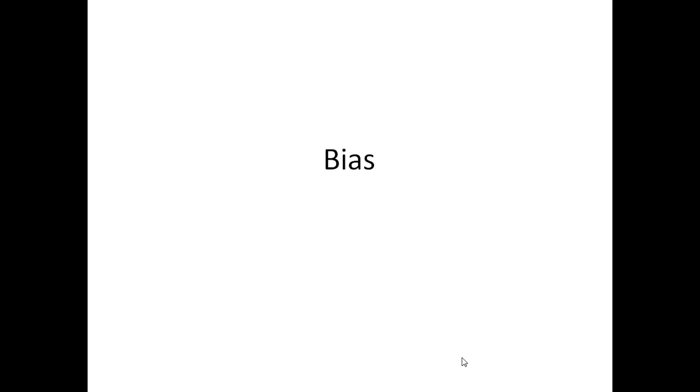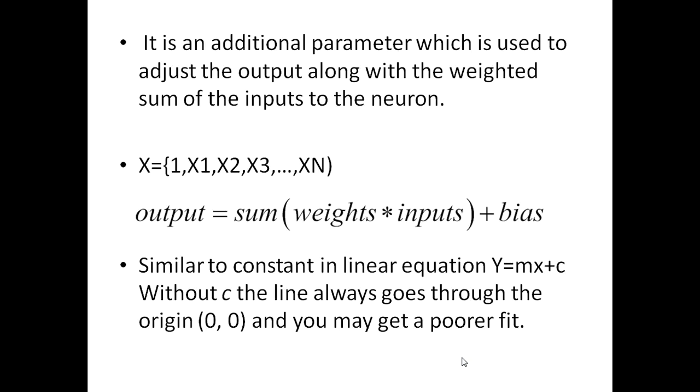Second important terminology is bias. What bias does is, it is an additional parameter. Say we have some summed values for generating the output of weight and input. We will have to add a bias with that one. Why we are adding bias? Because if we are not adding some bias, it's like a constant. If you are not adding it with the net input, then you will always get similar kind of results. That will be a poorer fit.